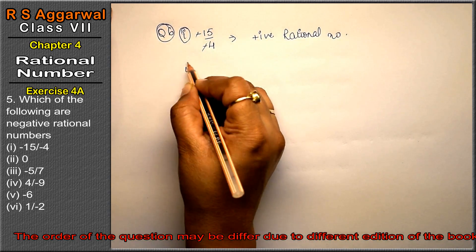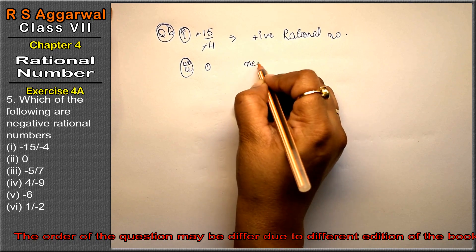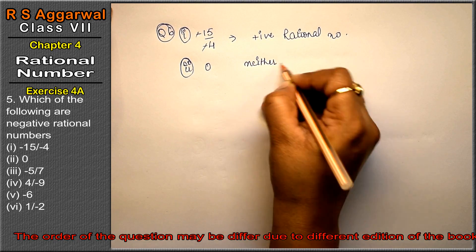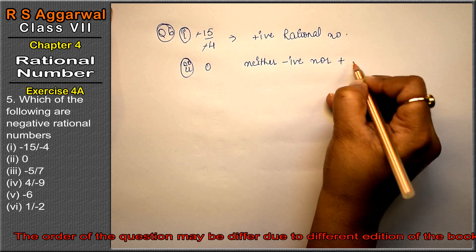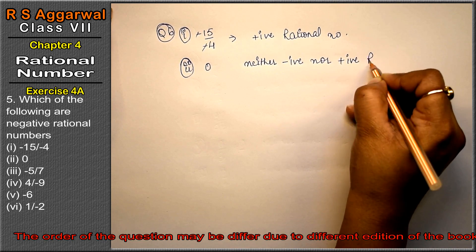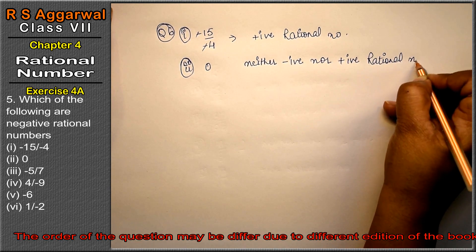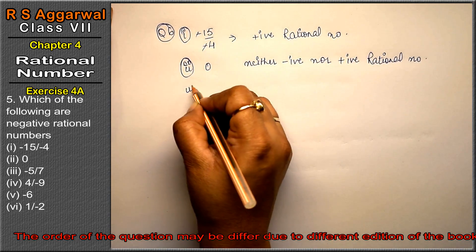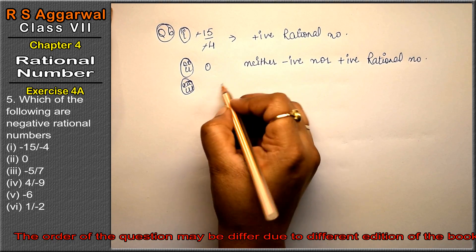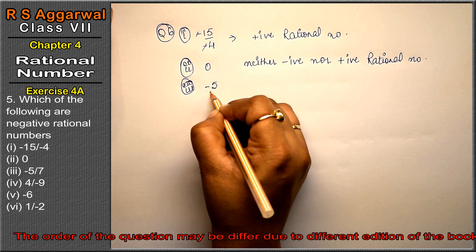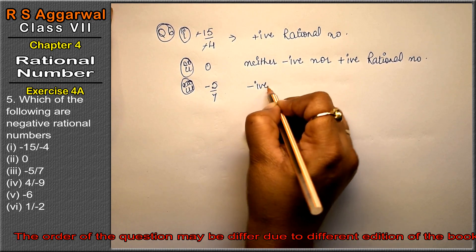Second is zero. Zero is neither negative nor positive, so it is not a negative rational number. Third part is minus 5 upon 7. There is a negative sign, so it is a negative rational number.